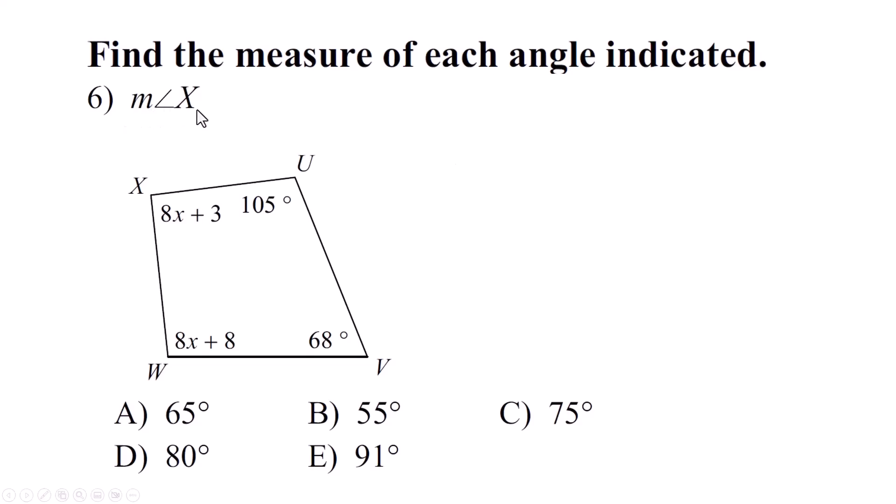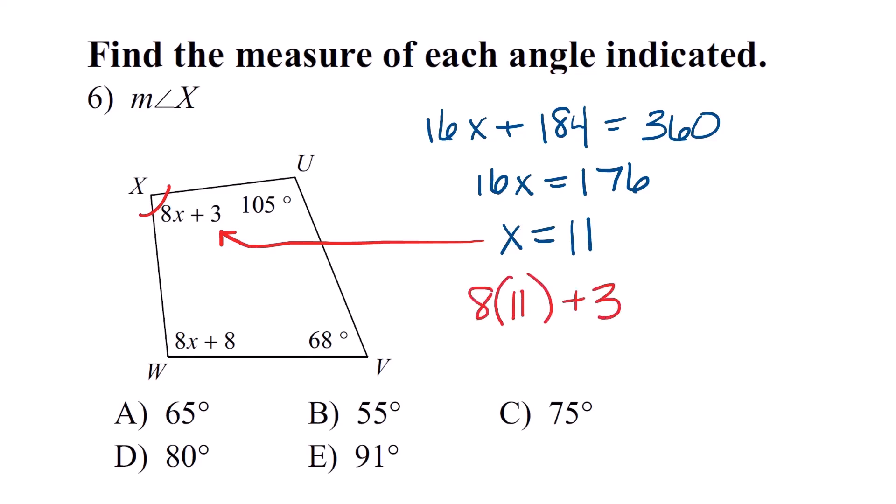We're going to do that again. Now we need to find the measure of angle X which is this guy up here. We're going to do this all the same way. Let's add the X's together. There are 16 X's inside here all together adding the numbers. We're going to get 184 and that equals 360. I'm going to subtract 184 from both sides. That's 16X equals 176. Divide both sides by 16 and I get X equals 11. Again that's not going to be your answer. It's not wrong. You just have to go one more step. Now we're going to multiply it times 8 and add 3 to it and we're going to end up with 91.